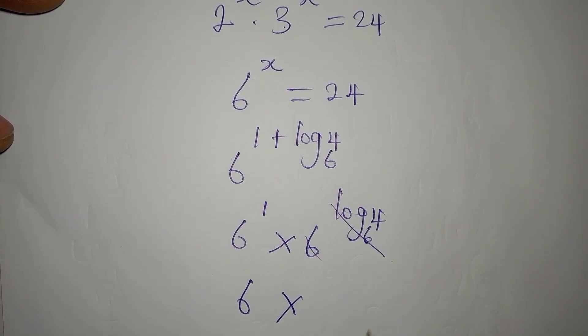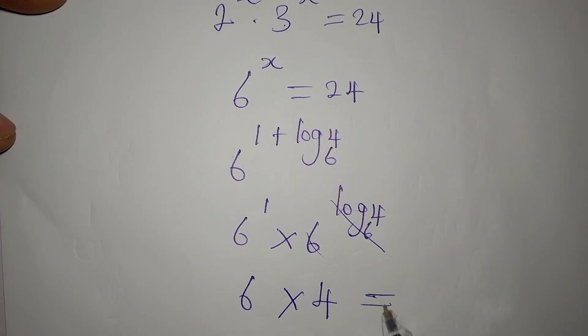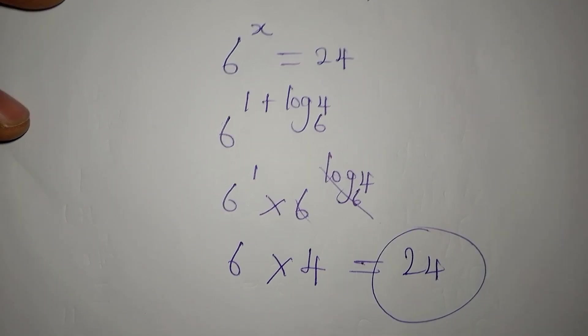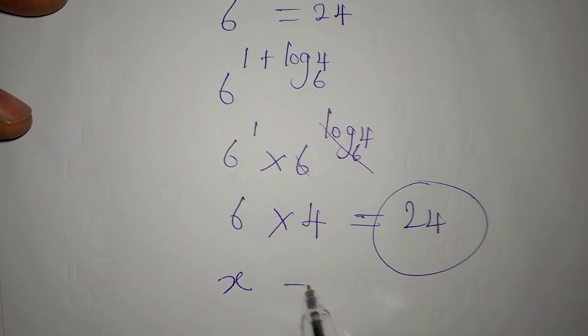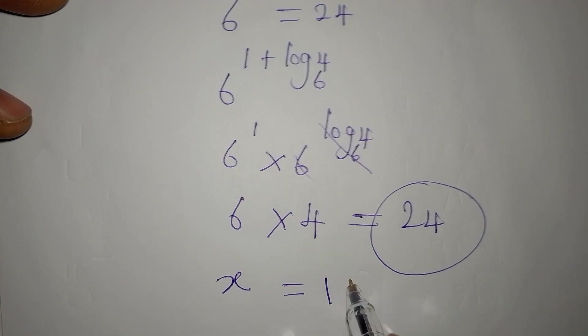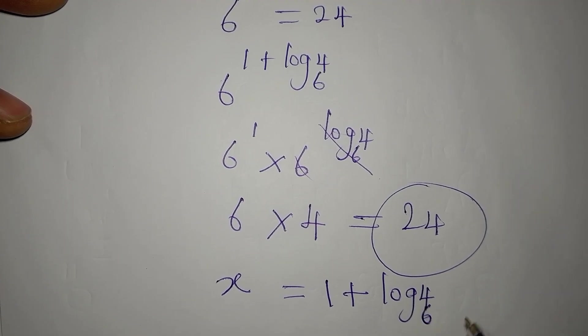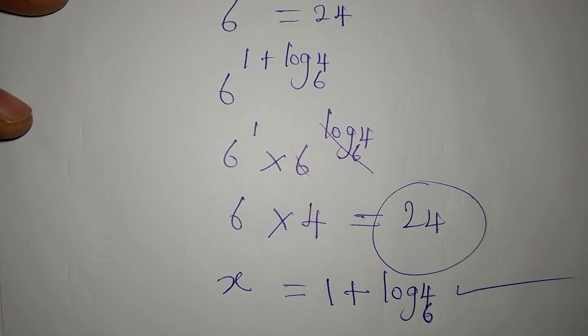6 to the power of 1 is 6, multiply by 6 to the power of log 4 to base 6. These cancel, giving 4. Then if you multiply 6 by 4, you get 24. So this means our x equal to 1 plus log 4 to base 6 satisfies the given equation.